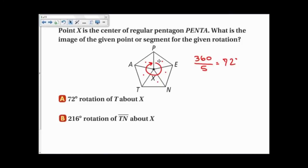Now, let's look at a 72 degree rotation of T about X. Now, if it's 72 degrees, I'm going one letter over. So I will start at T and go counterclockwise, one letter, and I'll be at N. So it's point N.